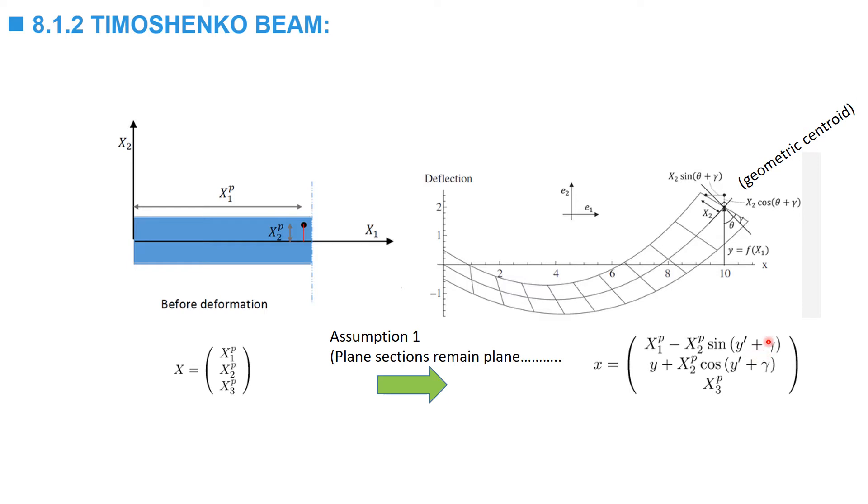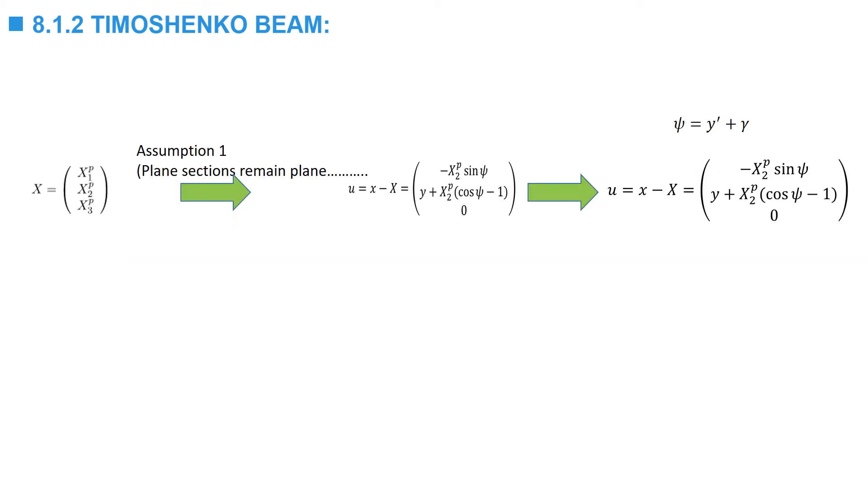In the Euler-Bernoulli beam, gamma is equal to zero. We will set psi as the total cross-section rotation, which is equal to dy by dx or y prime plus gamma.